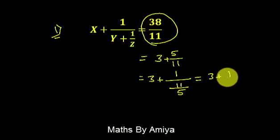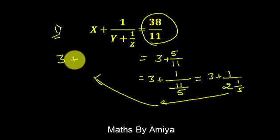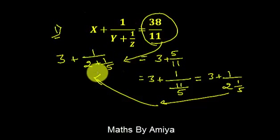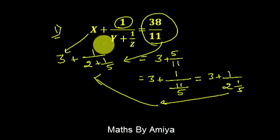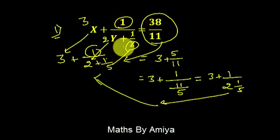Again convert this into 3 plus 1 upon 2 and 1 by 5. So we can write the complete expression as 3 plus 1 upon 2 plus 1 by 5. Whenever we have this type of question, we convert it into a complete continued mixed fraction. We have x is 3, then 1 matched, y is 2, 1 to 1 matched, z is 5. So we can say x is 3, y is 2, and z is 5, and we solve the question accordingly.